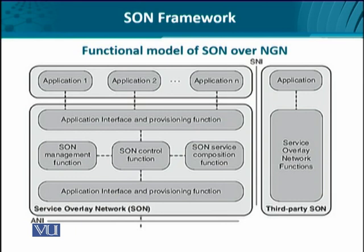The big box below is the service overlay network. The application layer talks to the service overlay network through the application-to-network interface. Then we have the SON functional modules. The application is connected to the service overlay network through a dedicated interface, which is also used to provide the connectivity of SON with the NGN.